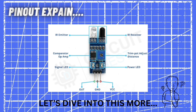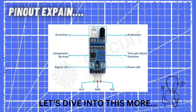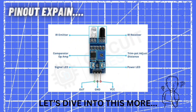Now let's discuss the pinout diagram of an IR sensor. In the image you can see there is an IR emitter, an IR receiver, a comparator op-amp, and also a trim pot or potentiometer to adjust the distance or sensitivity of the IR sensor. There are two LEDs: one is a signal LED and another is a power LED. The signal LED notifies you when the IR sensor senses an object, and the power LED indicates when the IR sensor is supplied with power. There are also three pins to connect it with microcontrollers: an output pin, a ground pin, and a VCC pin.